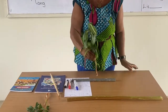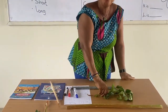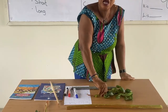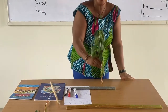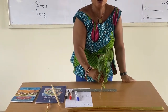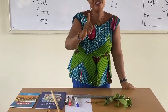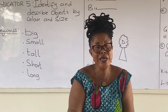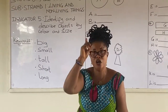So this tree — as soon as the tree lies down, we use long. But as soon as it stands upright, we use tall. Children, note the difference between long and tall.